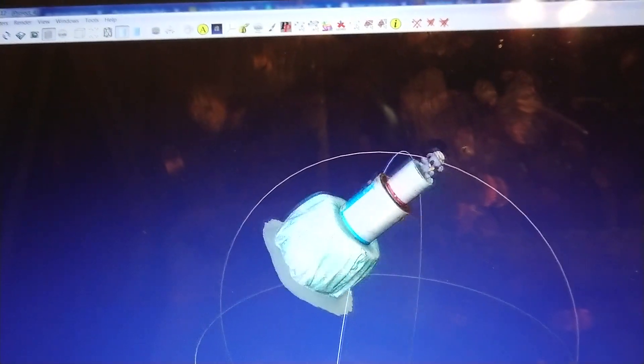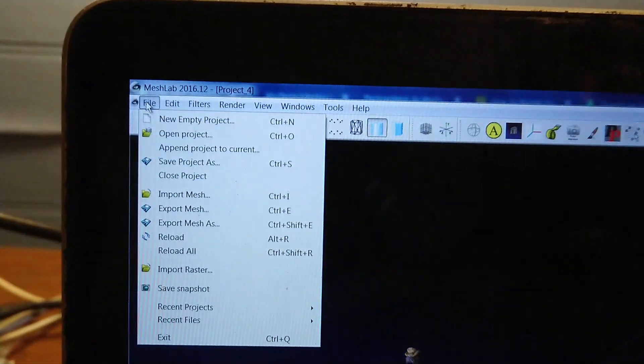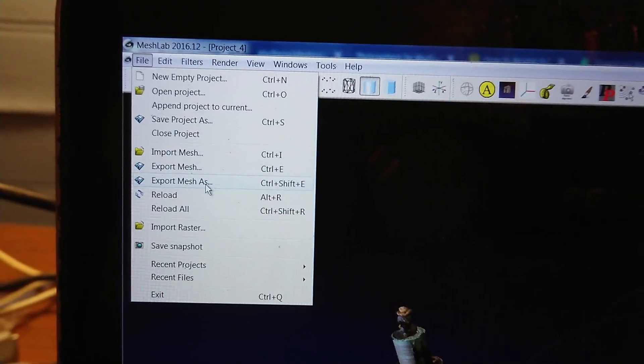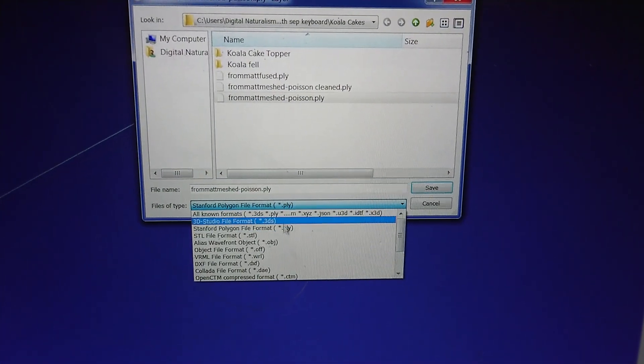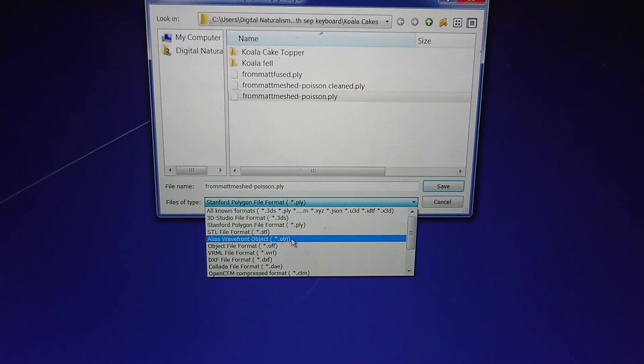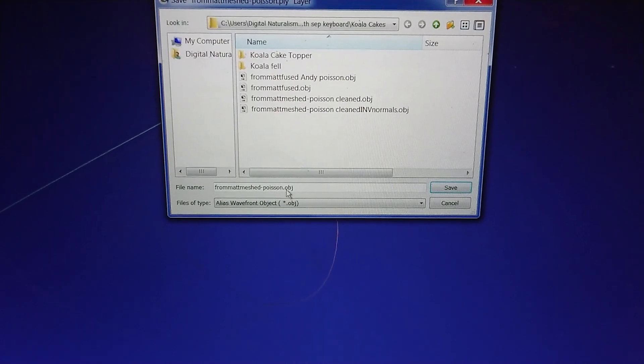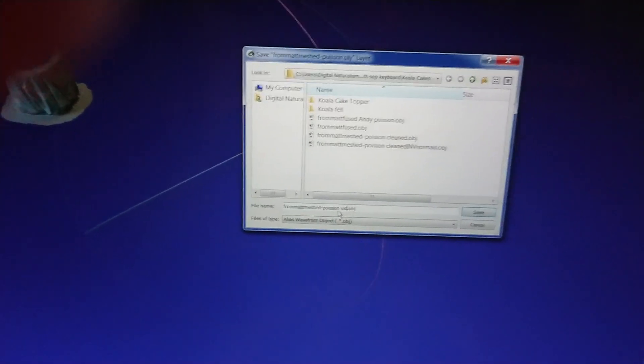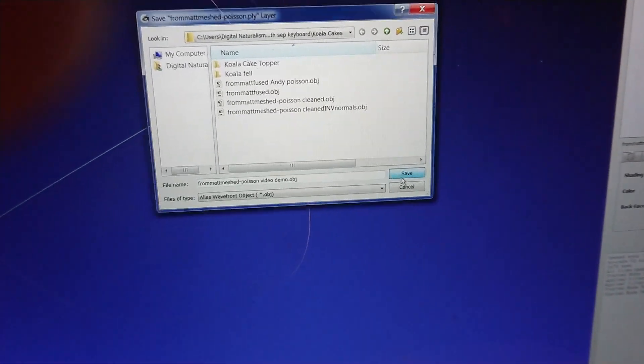Just going to back out of this and then the final step is simply go up to file and go to export mesh as. And for Unity, we don't want no plies, we want some OBJ files. So we just do this and this is my video demo. And once we have that OBJ file.